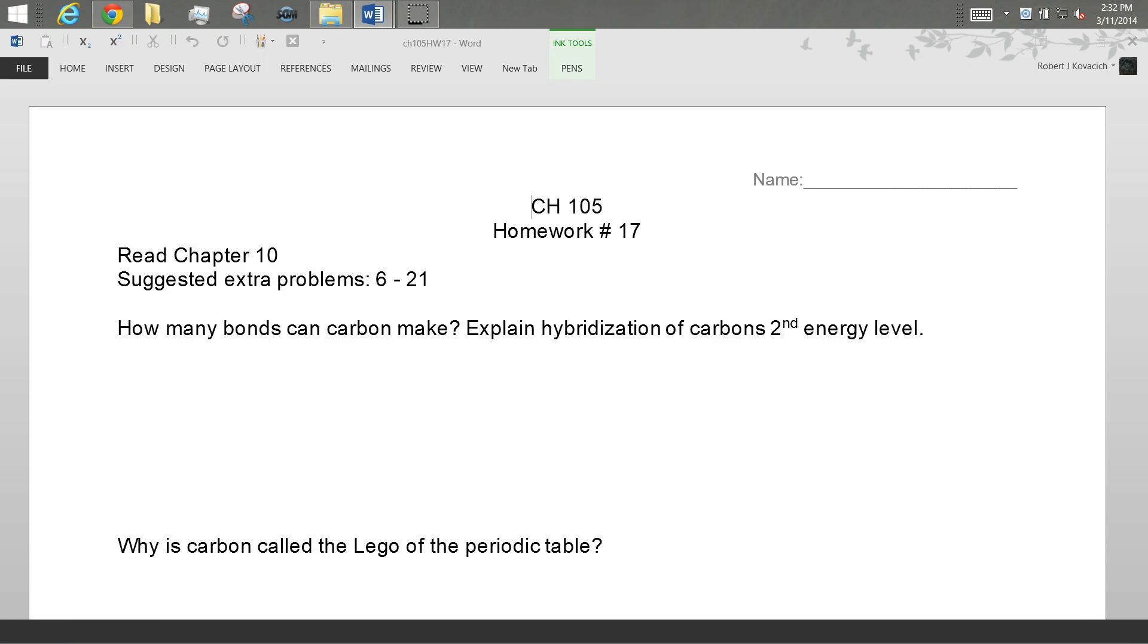Okay, so how is the carbon atom that's got the electron configuration 1s2, 2s2, 2p6 able to make four bonds? Explain.